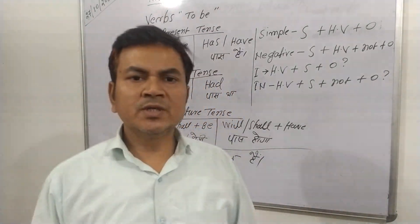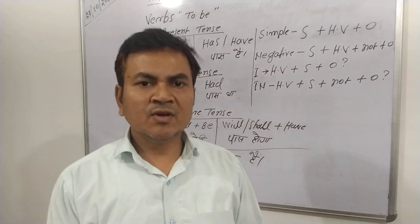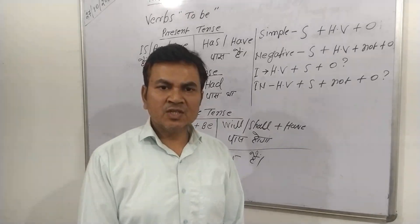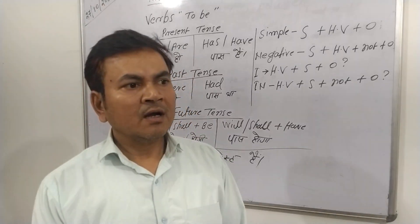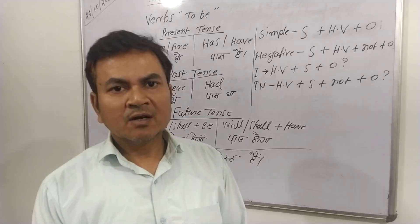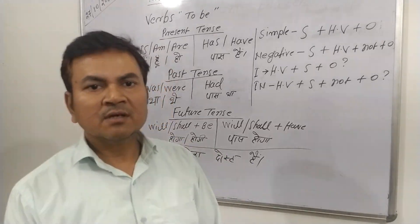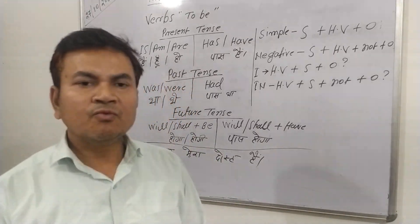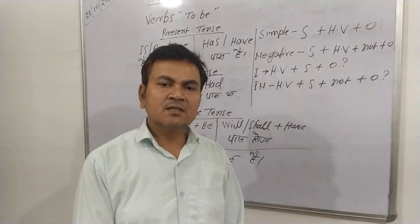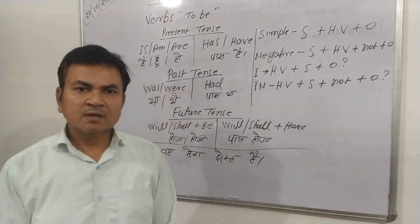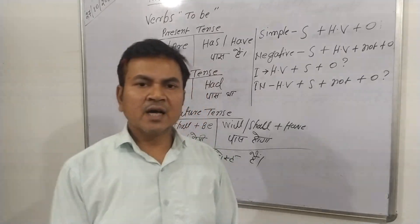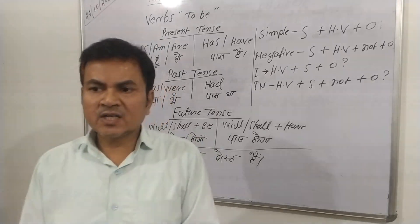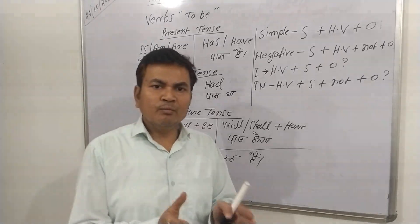Hello friends, today I am going to teach you a very basic level of grammar — that is 'verb to be'. You know verb to be, it is called ordinary tense also. They are: is, am, are, was, were, will be, shall be, has, have, had, and will have, shall have. These words are used to describe and tell us the condition of people, places, things, and ideas as they are. It means there is no action, there is no movement in the sentences.